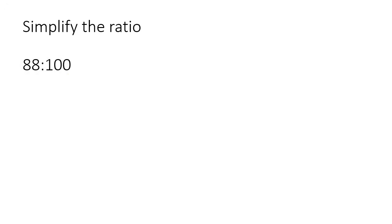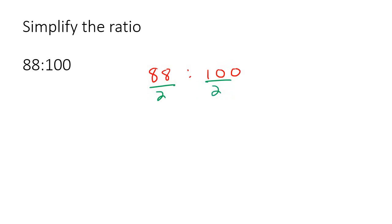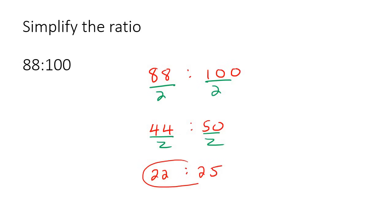A lot of learners think they have to find the biggest number first, but you don't. These numbers are quite big, so you don't have to think about what is the biggest number that can go into both — you can just start with the number two. So you divide both by two, and that's going to give you 44 and 50. But don't stop there, because now we can use the number two again. Divide by two again, and that'll give you 22 and 25. There is no number that can now go into both of those. Three doesn't work, four doesn't work, five doesn't go into both, six, seven, eight — nope. That would be your final answer.